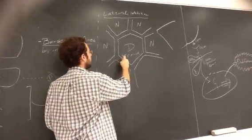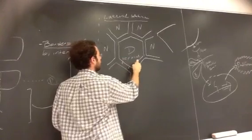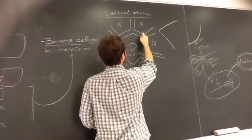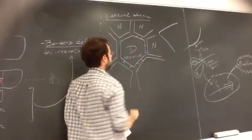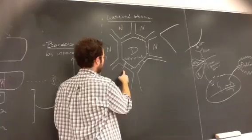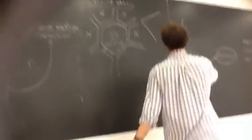And what happens is, the cells that become neuronal express Delta. And what Delta does is, it interacts with Notch in this pathway here.